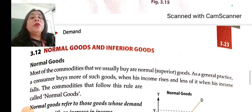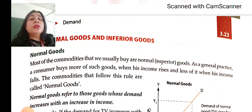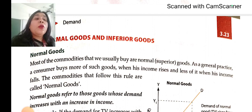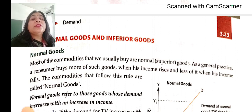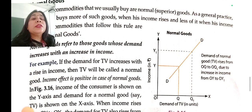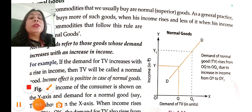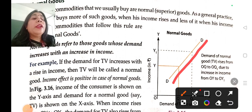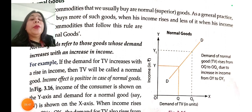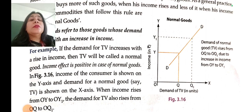Normal goods refer to those goods whose demand increases with the increase in income. If income keeps on increasing, a consumer will keep on demanding more of such goods — these are normal goods, and most commodities we consider normal goods are superior goods. The demand curve here is upward sloping because we are relating income with demand, not price. So price and demand are not depicted here; this is depicting income and demand, and the demand curve becomes upward sloping in the case of a normal good.